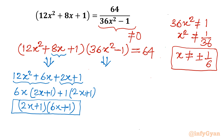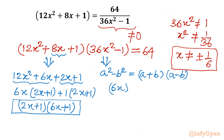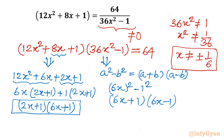For the second bracket, I use the algebraic identity a² − b² = (a + b)(a − b). I write 36x² as (6x)² and 1 as 1². So 36x² − 1 = (6x + 1)(6x − 1).